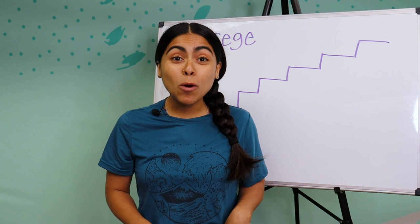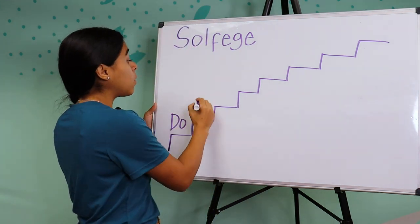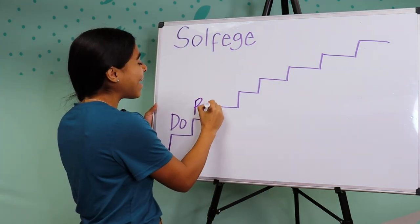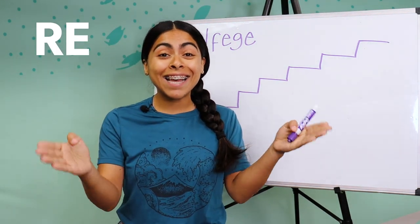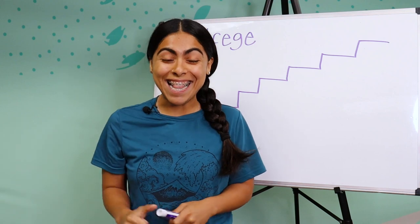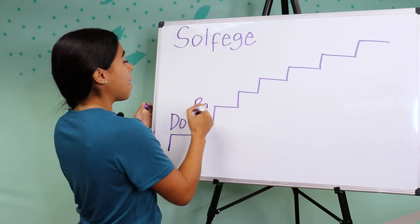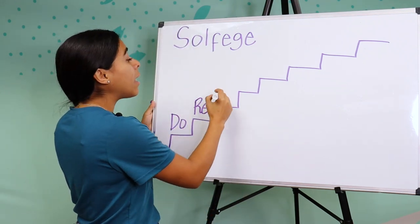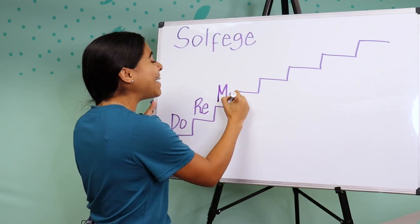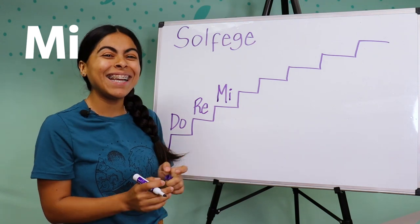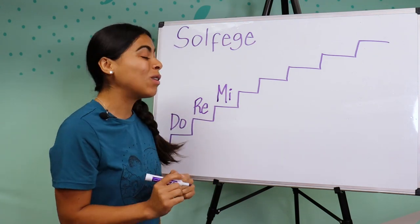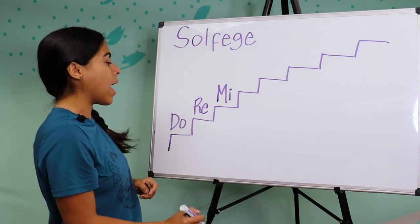Our first short sound is going to be do. So I'm going to write it here, but it's not any do, it's a special do. It sounds just like this: do. Can you do that with me? Do. Beautiful. The next one: re. Can we all say re?